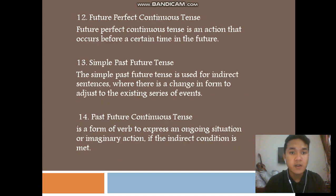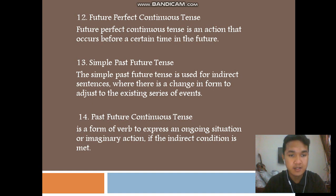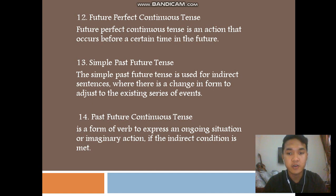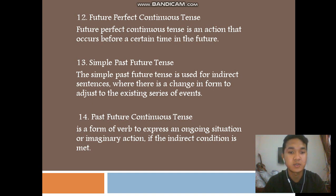Number twelve: future perfect continuous tense. Future perfect continuous tense is an action that occurs before a certain time in the future. Number thirteen: simple past future tense. The simple past future tense is used for indirect sentences where there is a change in form to adjust to an existing series of events.